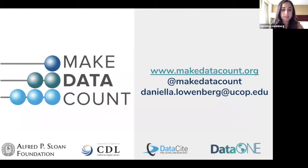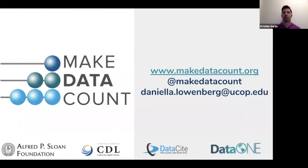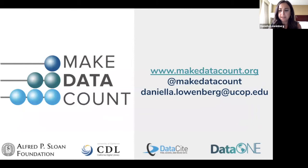Where can we find resources on pulling queries and utilizing the current EventData infrastructure, not necessarily as a repository but to see what's in there? All the information is inside the DataCite support website — there's a complete guide posted in the chat box on how to query the API and how to get usage and citations. Next question: how can a dataset have more downloads than views? Don't you have to view metadata to decide to download or not?